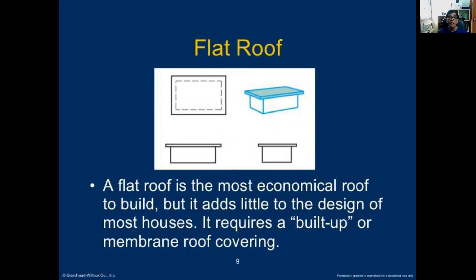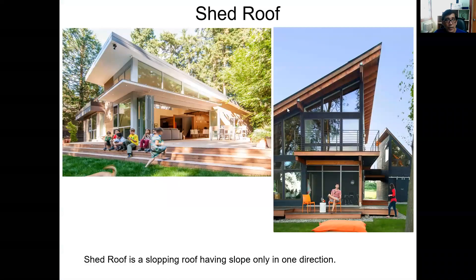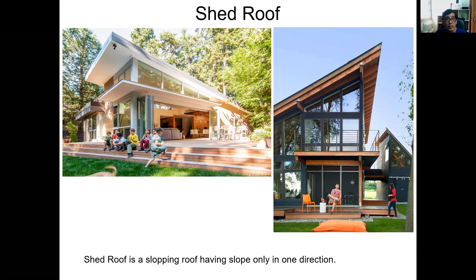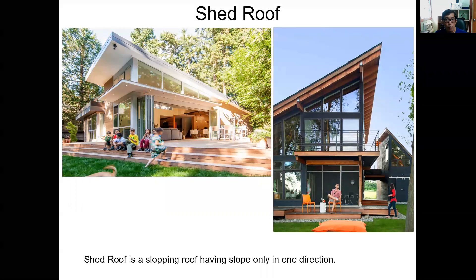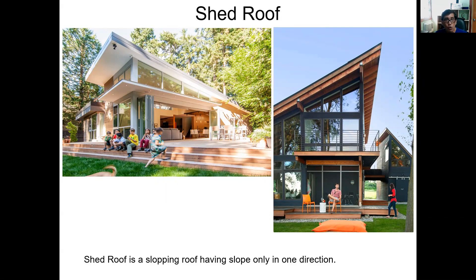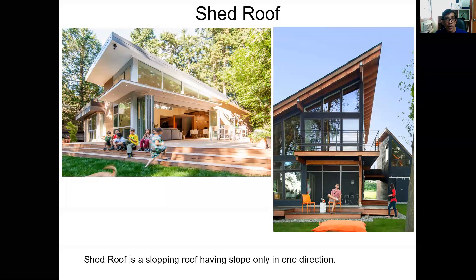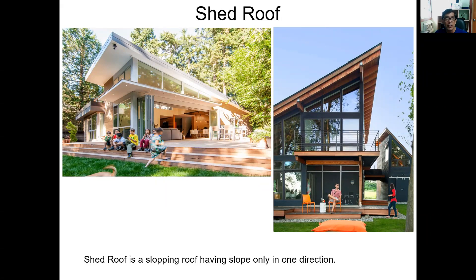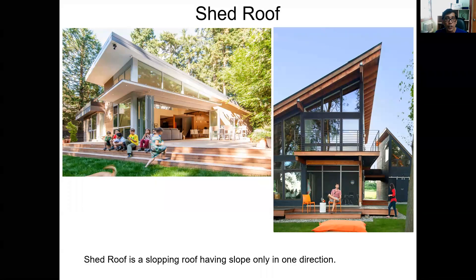The shed roof is a sloping roof with slope in only one direction. Architecturally, the slope can be emphasized in the building facade as a design composition. The shed roof admits more light inside rooms and is very applicable in areas with cold climates that need large exposure to sunlight. In tropical countries like the Philippines, it can be used but with a less steep slope to limit direct sun exposure.